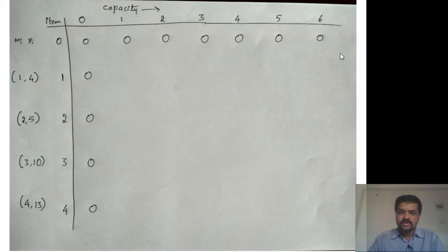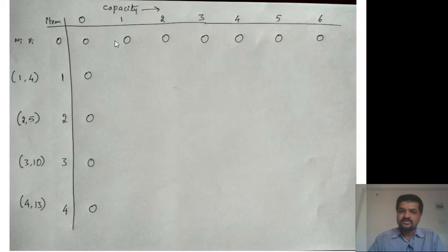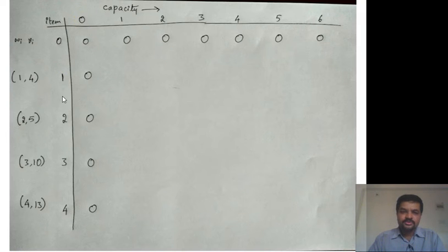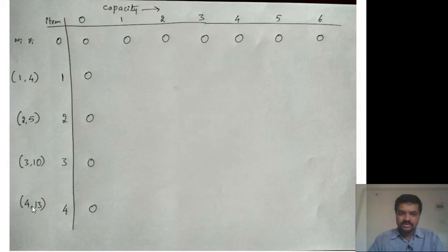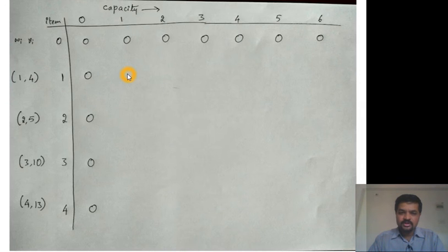The first row is all zeros because when none of the items are allowed to choose, irrespective of the capacity of the knapsack, the value is 0. The first column is all zeros because when the knapsack capacity itself is 0, it doesn't matter how many objects are allowed — we cannot put any objects in. In this problem we have four objects with listed weights and values and a knapsack capacity of 6. We fill the table bottom-up and when we fill f(4, 6) we find the solution.